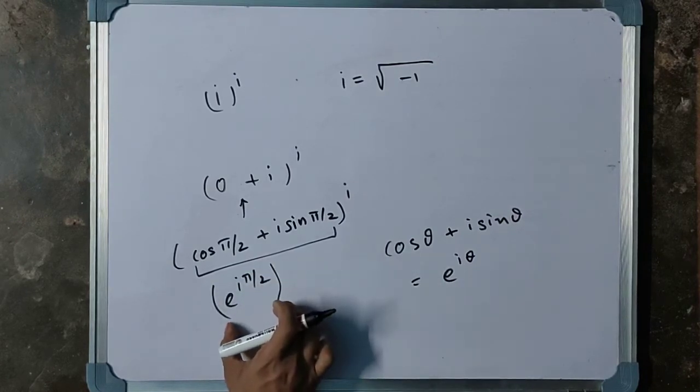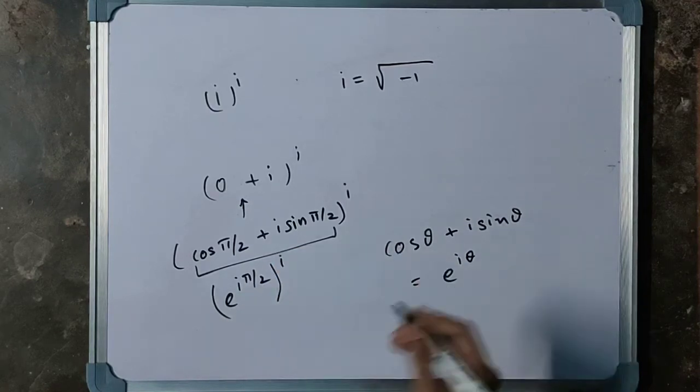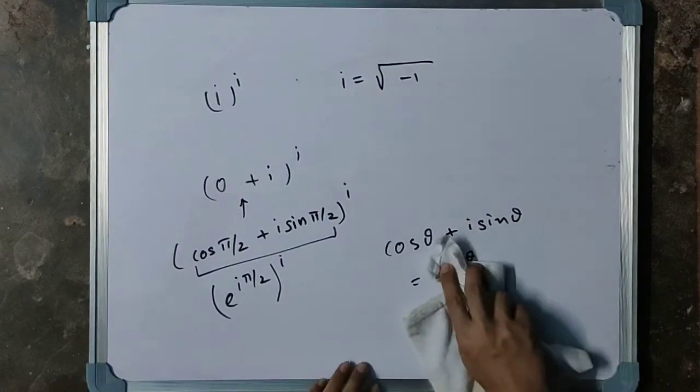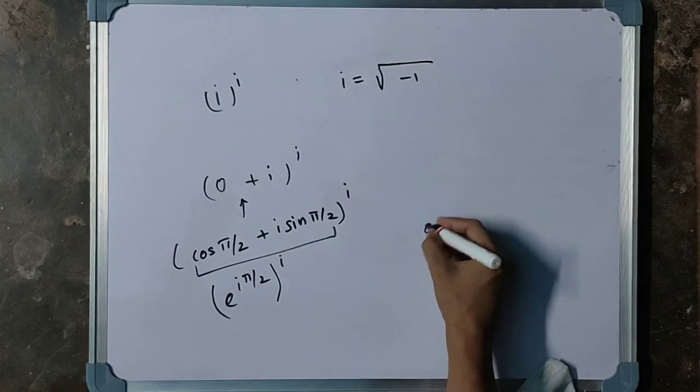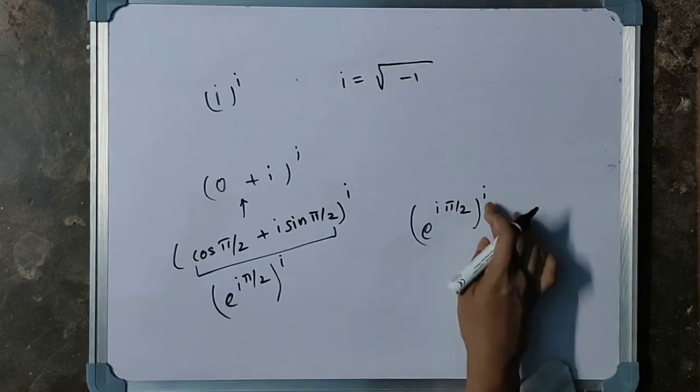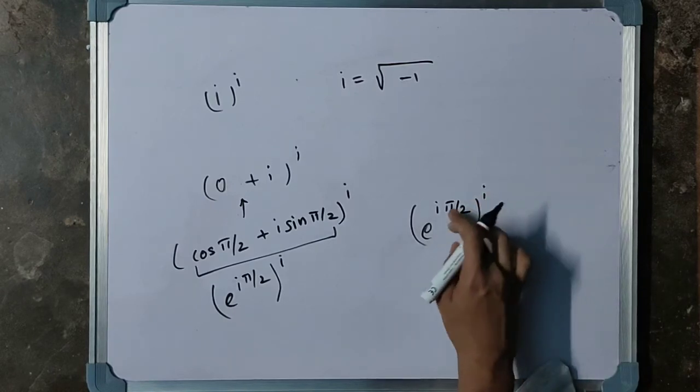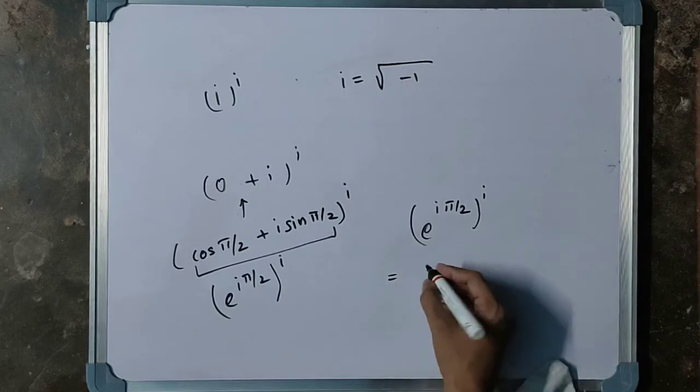This is the term inside the bracket, and outside the bracket it is raised to the power i. So till now, we got e to the power i π/2, raised to the power i. Now, this will get multiplied.